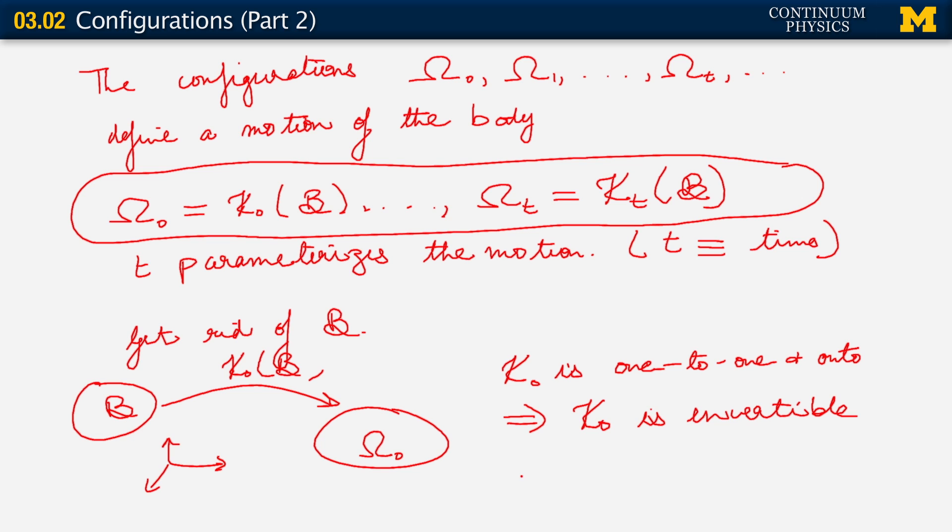So the body B can always be described as kappa naught inverse of omega naught. And any particle that we want to refer to on the body can always be represented as kappa naught inverse of that position x. And I'm doing this only with that configuration omega naught. Of course, we could equivalently have done it with any other configuration.